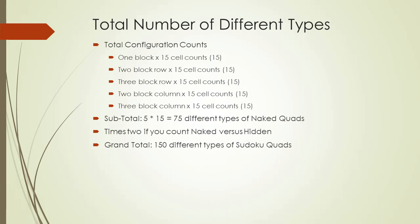So in this video, we have identified five different orientations and 15 different cell count configurations. For naked quads, we have identified a total of 75 different types. If we take into account naked versus hidden, we have a grand total of 150 different quad types in a Sudoku puzzle. Let me know if you find any other type of quad not mentioned here — I try to be perfect with these videos, but experience often has shown otherwise.